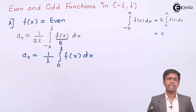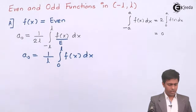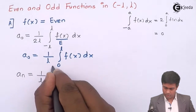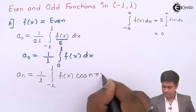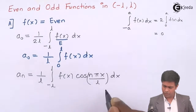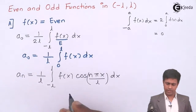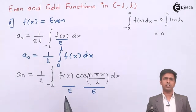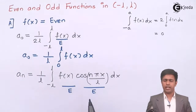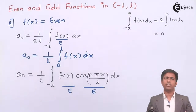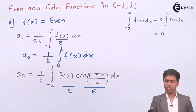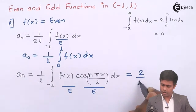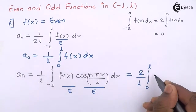Similarly, aₙ is given by one over l times the integral from negative l to l of f of x cos(nπx/l) dx. Since f of x is even and cosine is a universal even function, even multiplied by even is also even. By the property of even functions, this becomes two upon l times the integral from zero to l of f of x cos(nπx/l) dx.